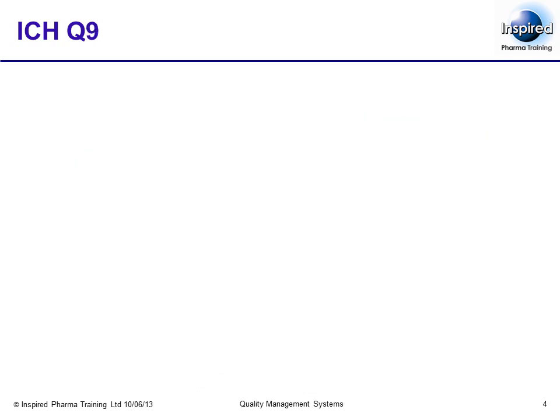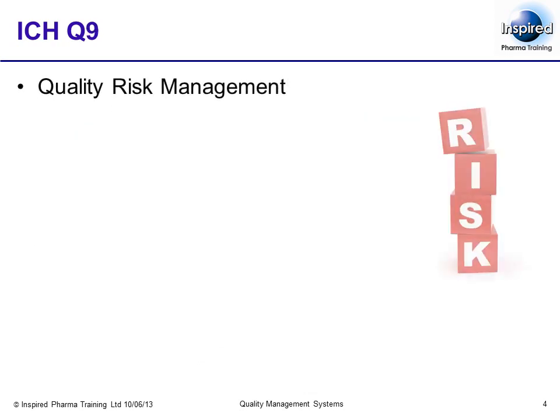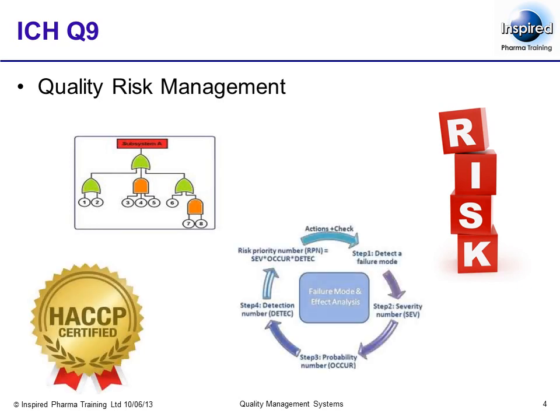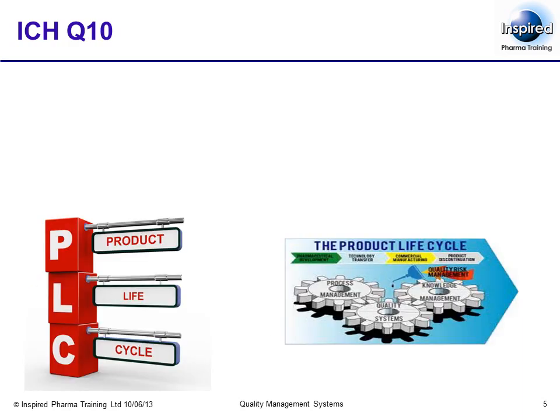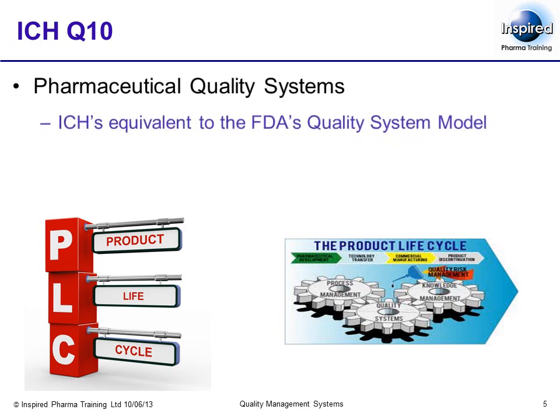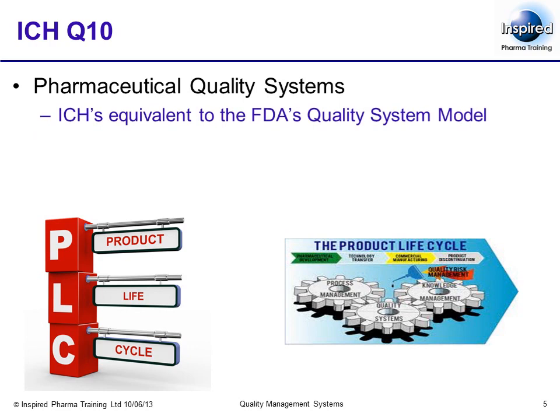ICH Q9 covers quality risk management and provides, for the first time, details about how you may perform risk management within a pharmaceutical environment. Risk management in itself is dealt with in a later unit. ICH Q10 covers pharmaceutical quality systems and is very much the ICH's equivalent to the FDA's quality system model that was discussed at Chapter 4a.